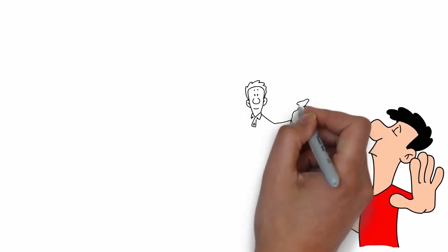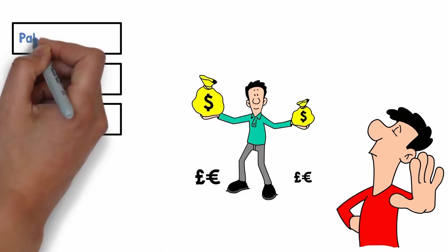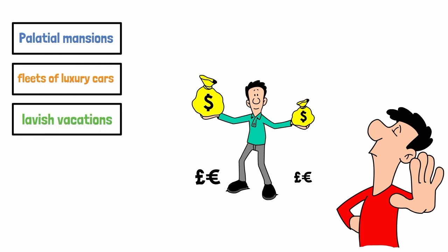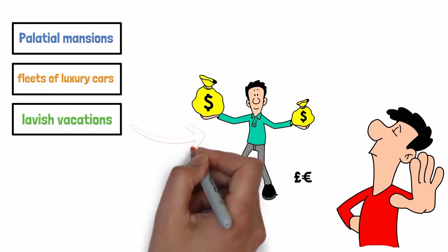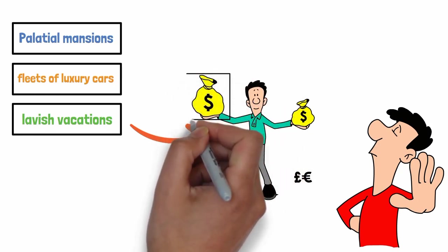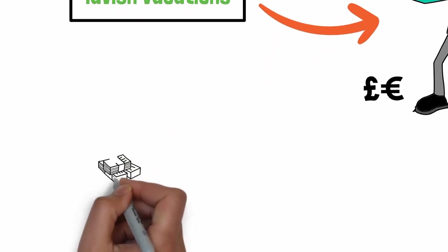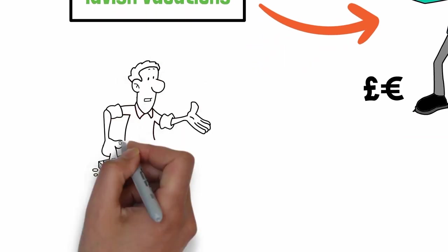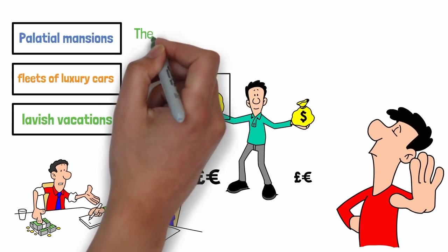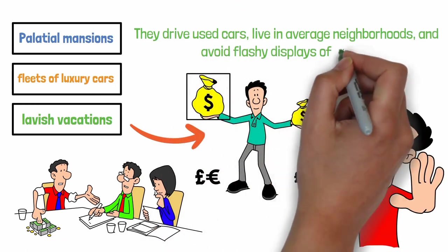Many wealthy individuals choose to live far below their means. They could afford palatial mansions, fleets of luxury cars, and lavish vacations, but instead, they opt for simpler, more modest lifestyles. This phenomenon isn't exclusive to the mega-rich either. Many high-net-worth individuals also prefer modest living. They drive used cars, live in average neighborhoods, and avoid flashy displays of wealth.